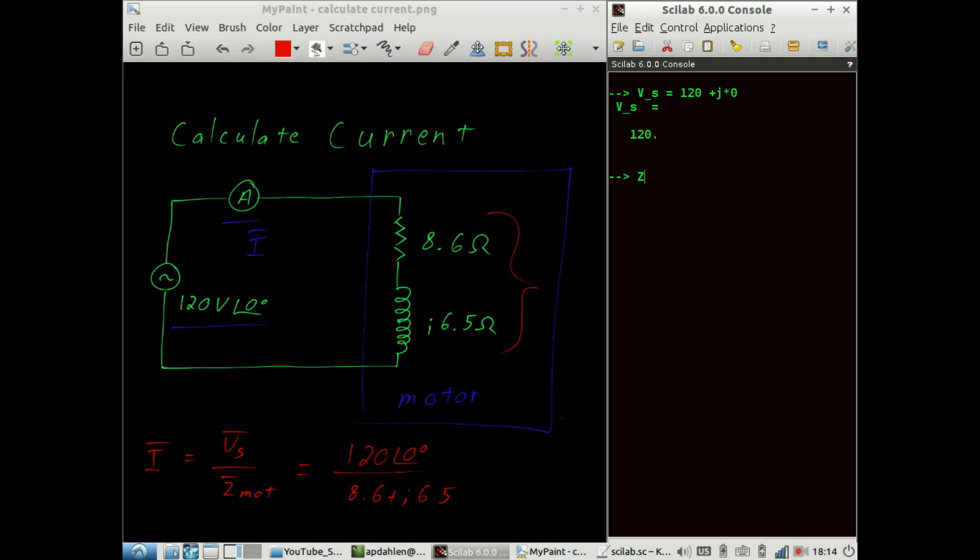Now we can enter the impedance of the motor, and that is equal to 6.8 plus J times 6.5. And now we can calculate the total current.